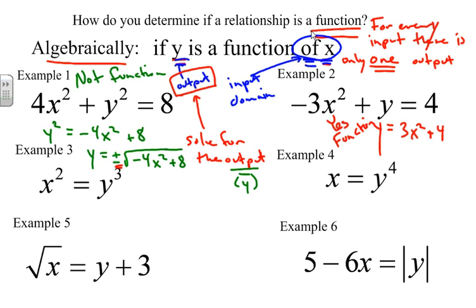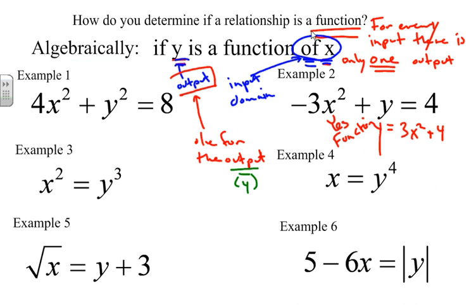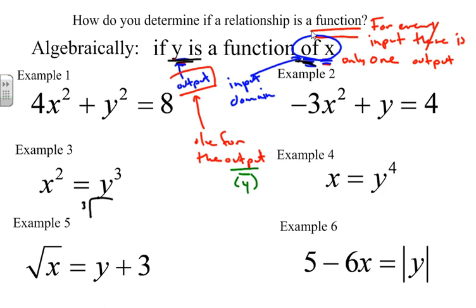Moving to the next example, we solve for Y — our output. We take the cube root of x², which gives us one value for Y. There's no plus or minus when taking a cube root, so for every input there is one output. Yes, this is a function.